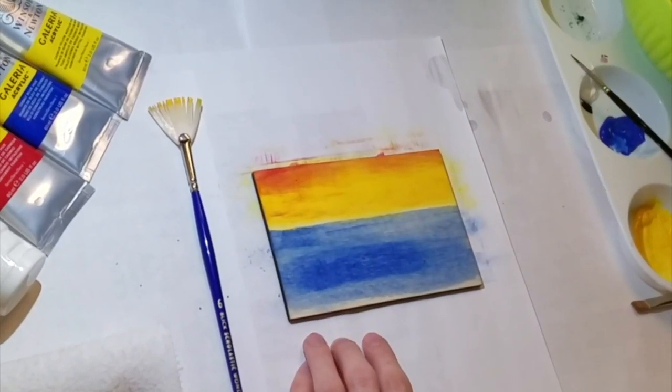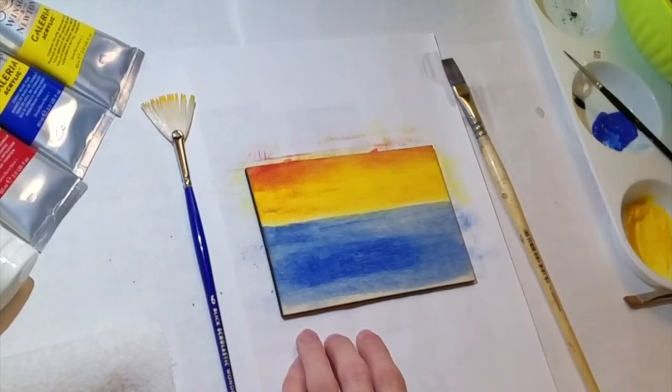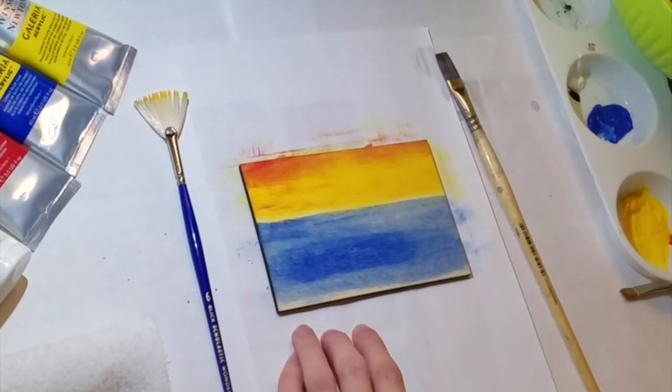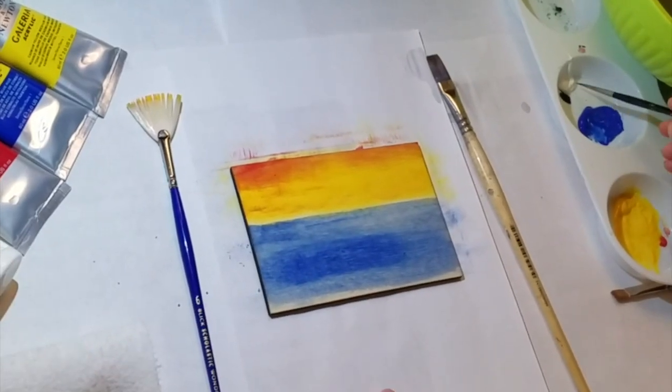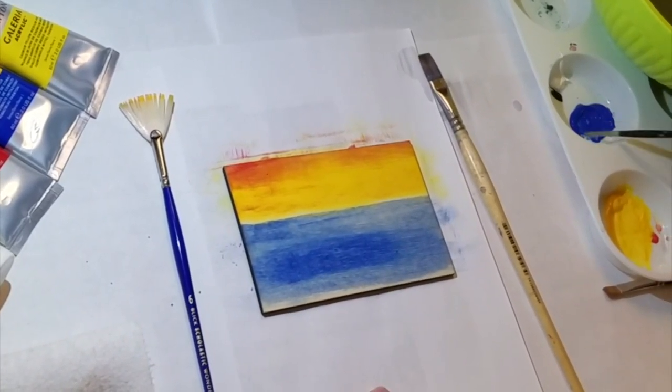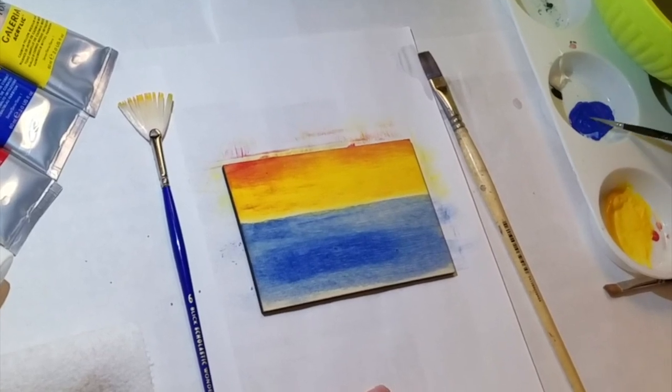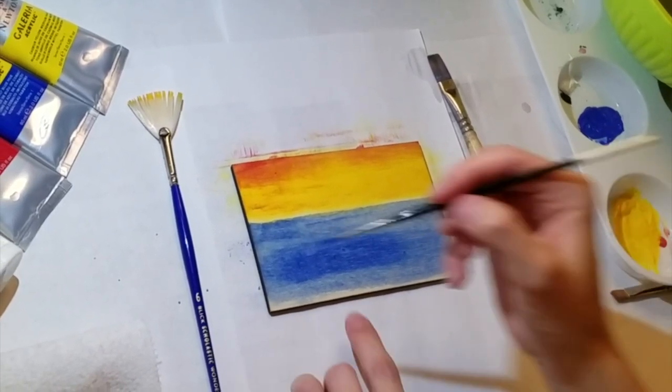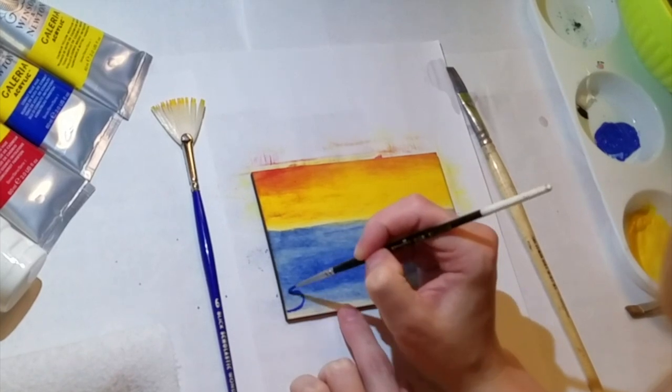Okay, and once that blue, that first layer of blue was dry, I went in with a smaller brush. I added just a very small amount of white to the blue, just to give it a little bit of opacity without making the blue a lighter color. And I then painted the scales on top.